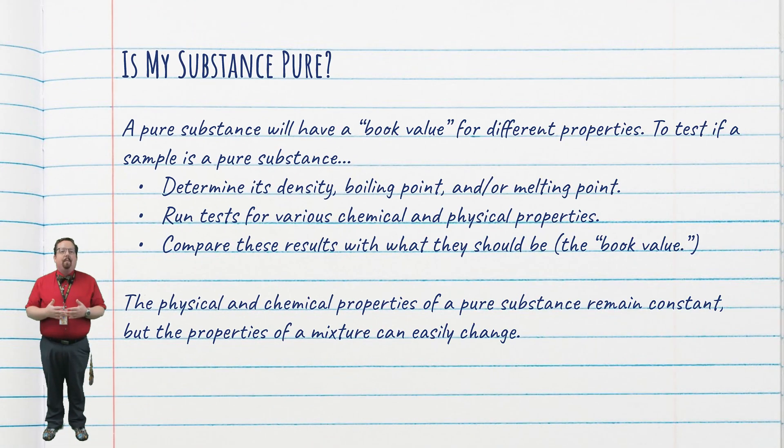In order to determine if a sample of something is a pure substance, you can look at its various physical and chemical properties. The easiest to look at are density, boiling point, and melting point. You can easily find the book value, or what scientists agree is the correct value, for those three properties, and then compare those values to what you found for your substance. If you still can't identify your substance at that point, you could try undergoing various chemical reactions to observe its chemical properties. However, if you can't identify a sample based on the physical properties, it's likely that you have a mixture. A big difference between pure substances and mixtures are that the intensive physical properties and chemical properties of a pure substance always remain constant. Those properties can easily change in a mixture, depending on what substances and how much of each component are present in the mixture.